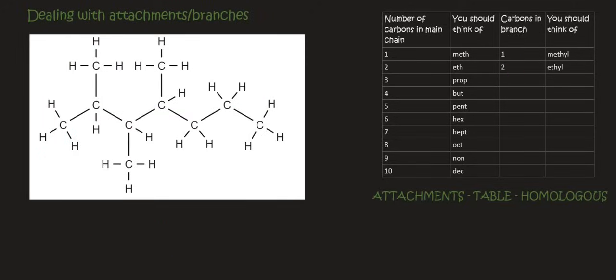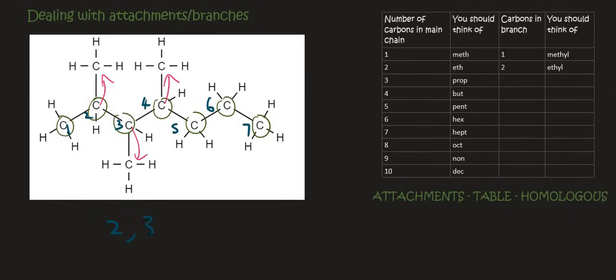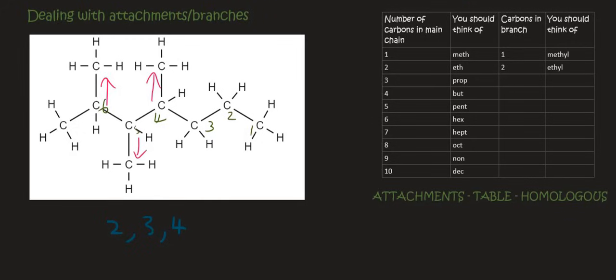With this next molecule, the longest continuous chain is 7 carbons. The attachments are at three positions. Now because this is an alkane, there's no particular area where the functional group is, so we need to look at the branch numbers. Labeling from the left gives branches at carbons 2, 3, and 4. Labeling from the right gives branches at carbons 4, 5, and 6. We clearly want to choose the first option where the numbers are 2, 3, and 4, so we label from left to right.